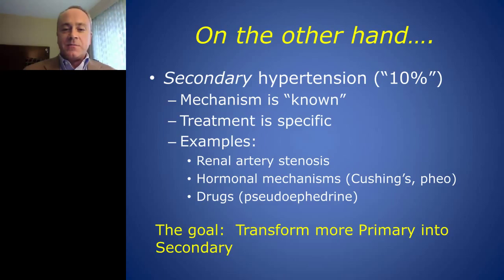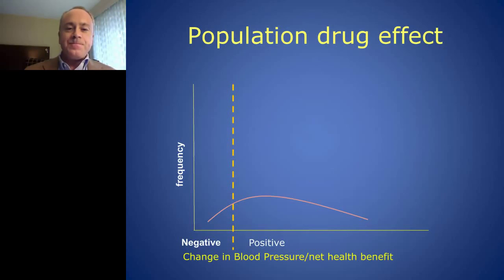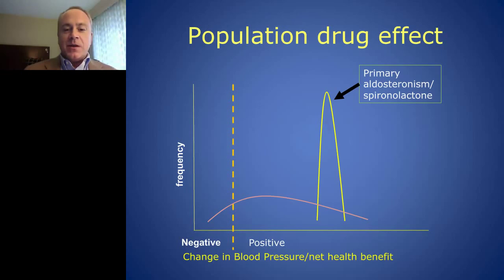The goal overall in the hypertension treatment world is to transform more primary or unknown mechanistic hypertension into a secondary form that we can narrowly treat. If we look at the population effect graph, we can superimpose primary aldosteronism — if we can identify that population, there is a very specific treatment with a very robust effect and very limited negative effects. That treatment would be spironolactone, which we'll get into later.